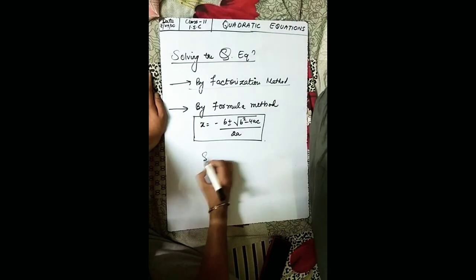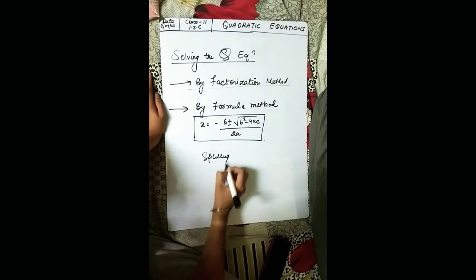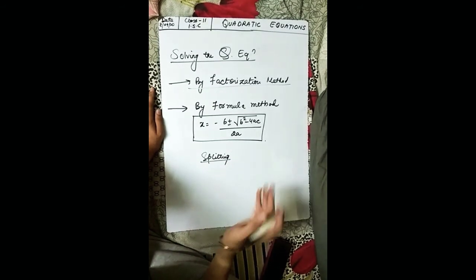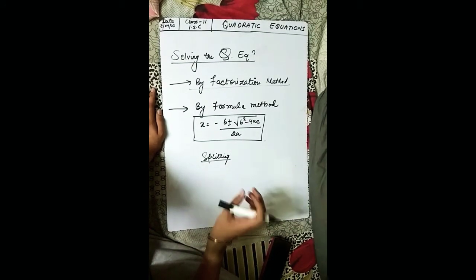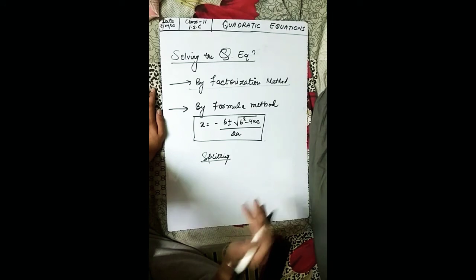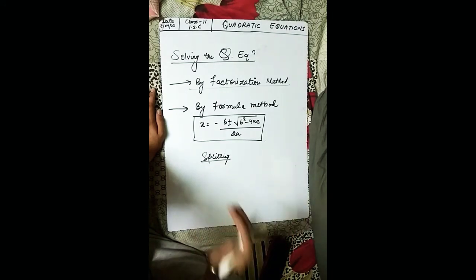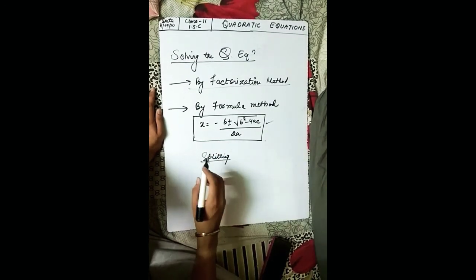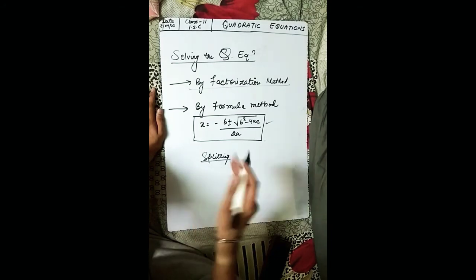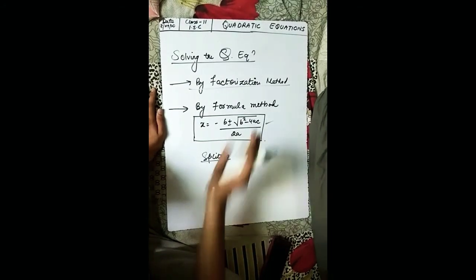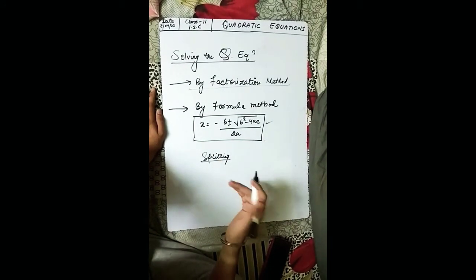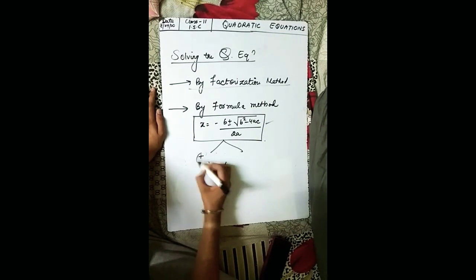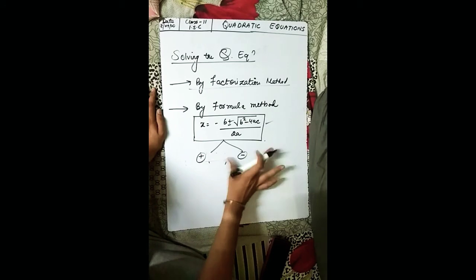By factorization, we split the middle term in such a way that we factorize into two brackets, then set each bracket equal to zero to get the roots. The formula method is a direct method where you identify a, b, c, substitute into the formula, and get two values — one for the positive case and one for the negative case.